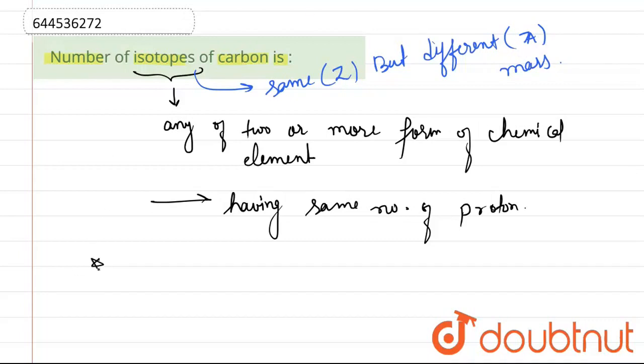In this question, we have been asked about the isotopes of carbon. So number of isotopes of carbon are three. They are C-12 with atomic number 6, then C-13 with atomic number 6, and we have C-14 with atomic number 6.